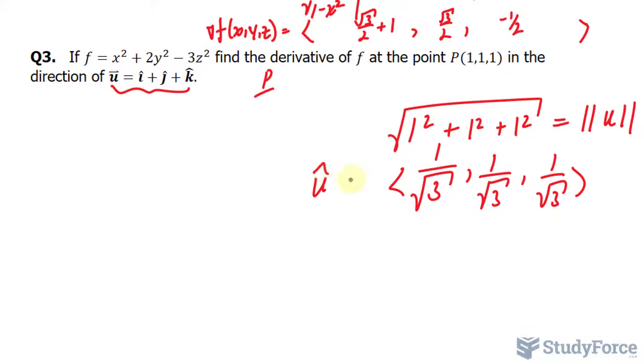Notice that we've put this hat, which symbolizes that it's the unit vector. Once you find the unit vector, you need to find the partial derivative with respect to x, y, and z.